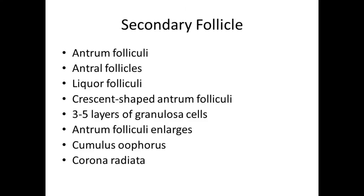A secondary ovarian follicle is characterized by the presence of a cavity called antrum folliculi, and that is why they are called antrum follicles. During development, liquor folliculi fills the increasing space of antrum folliculi. At this stage, stratum granulosum is composed of 3 to 5 layers around the antrum.